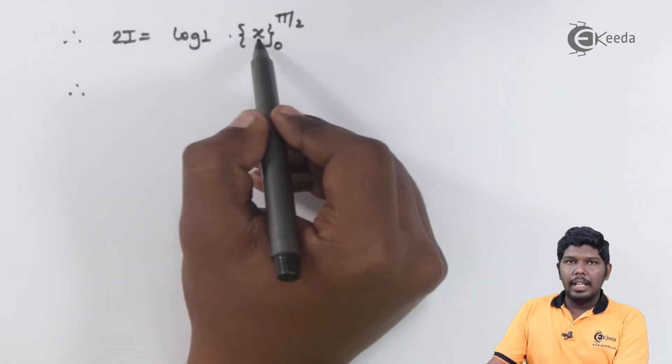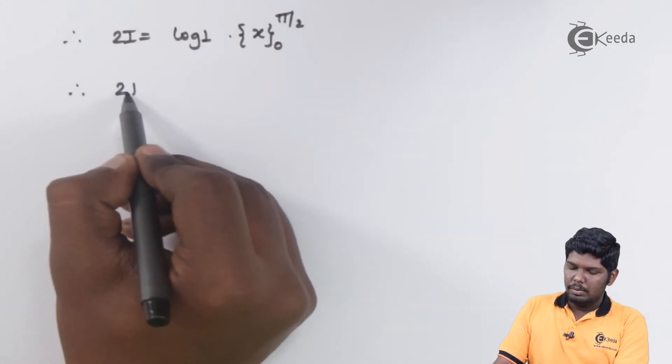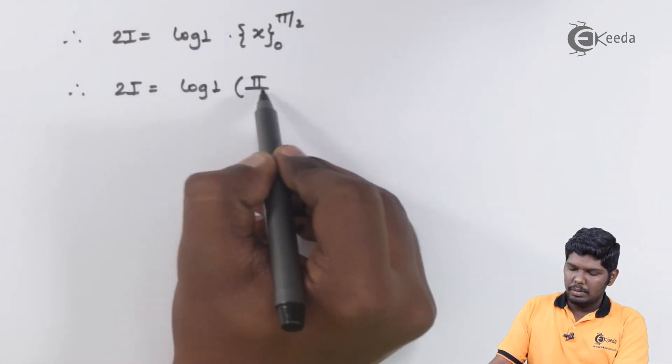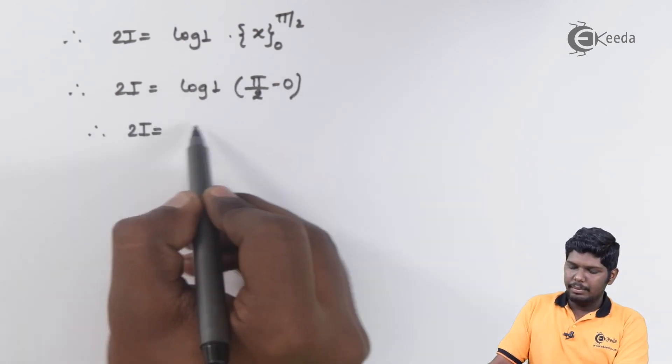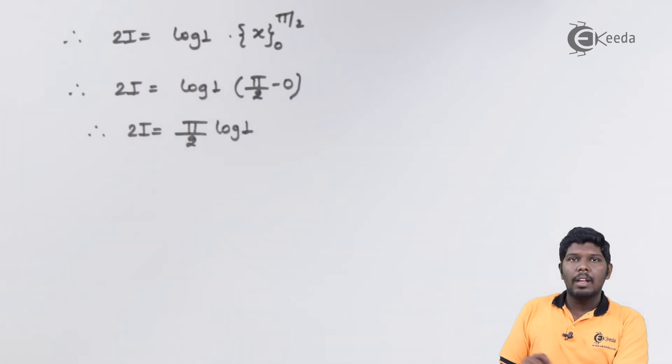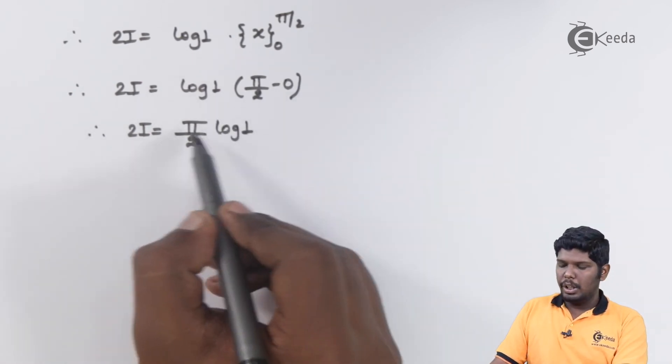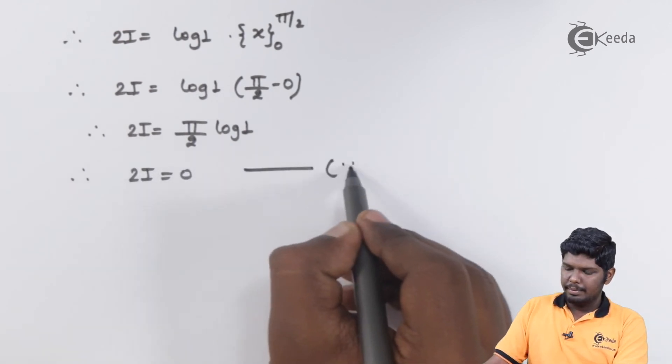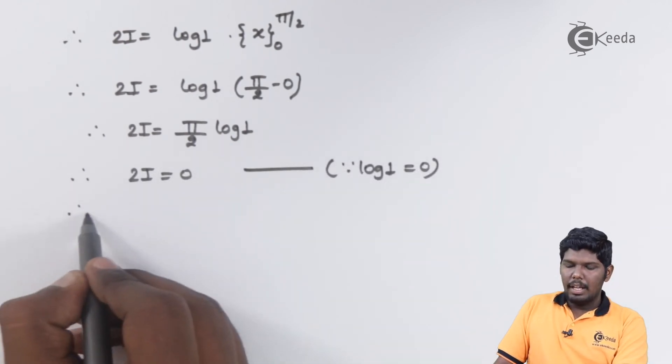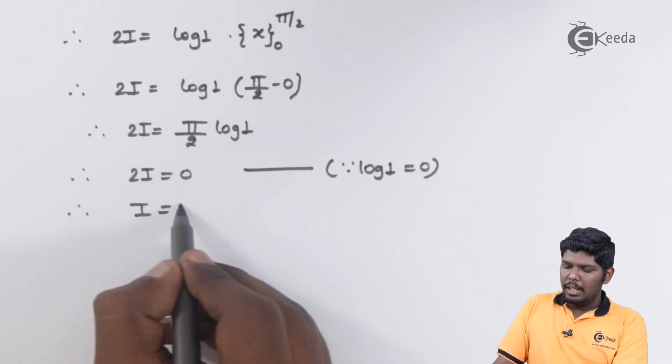In the next step we can put x as pi by 2 minus 0, which will give you pi by 2 log 1. But as we know the value of log 1 is 0. So 0 into pi by 2 will give you 0 only. Therefore the value of i will be 0.